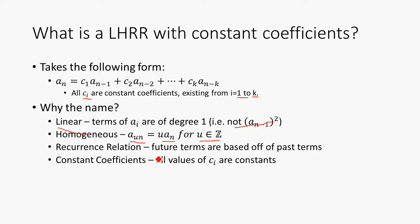Recurrence relation, that basically just means that the next term is based off the previous ones, and constant coefficients—all c_i are constants.